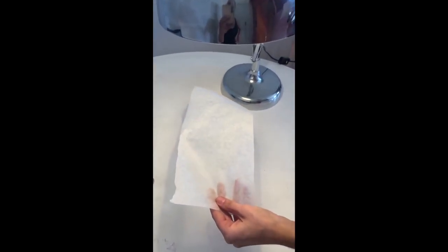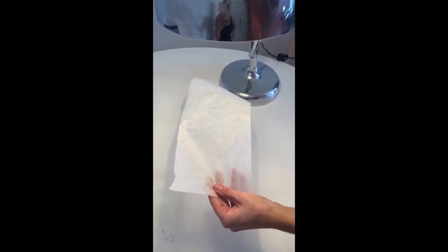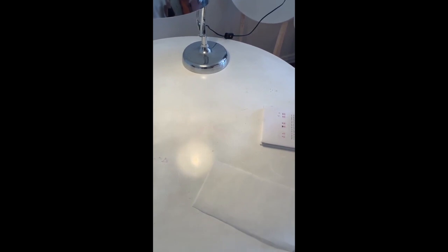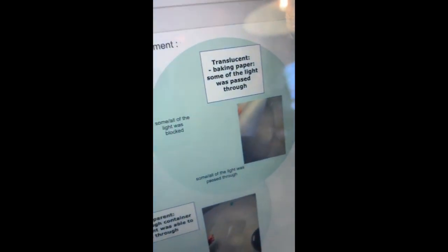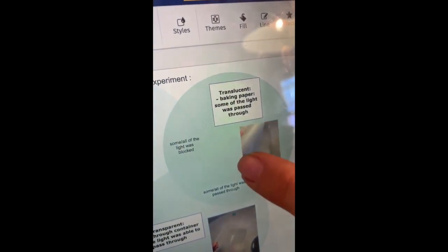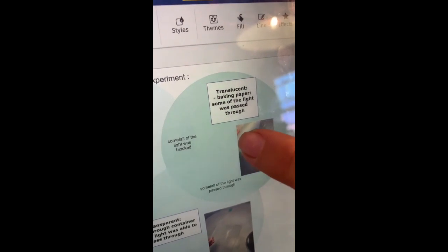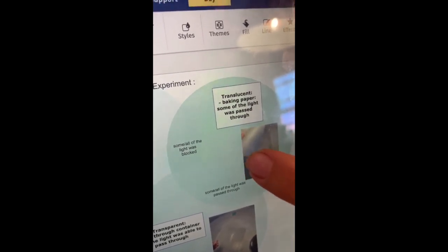Step 8. Place the baking paper underneath the lamp. What do you see? Step 9. Students should record their observations and results using smart draw, whether the object is either transparent, translucent or opaque and why. In the example here, the student has written that the object, baking paper, is translucent because some of the light was passed through.